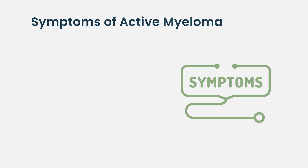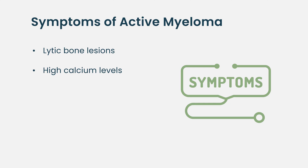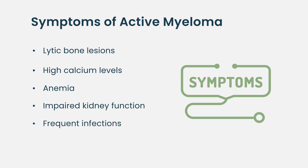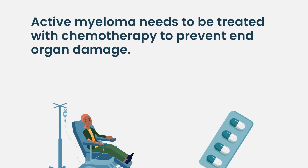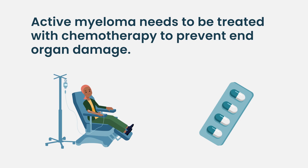That's very different from multiple myeloma, sometimes called active or symptomatic multiple myeloma, where the myeloma is causing problems. The typical problems we see from myeloma are lytic bone lesions, high calcium levels, low blood counts especially anemia, which is low red blood cells, and kidney injury, as well as a predisposition to infection from decrease in the immune system.